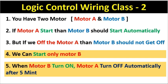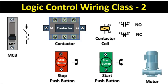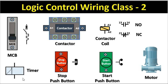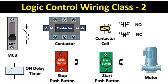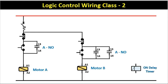Now, if we turn on motor B, motor A must turn off automatically after 5 minutes. Since there is a time condition, we have to use a timer. A timer is not among the existing electrical components shown, so I am adding a timer here. Since the logic says 'after 5 minutes,' we use an on-delay timer. I am copying this on-delay timer and pasting it into the circuit diagram.